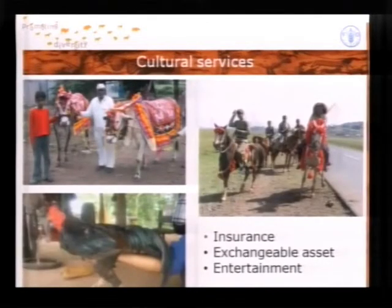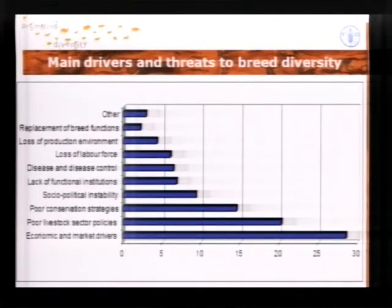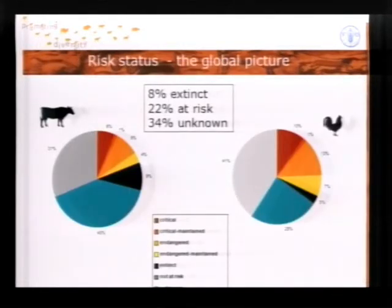There is a wide range of cultural services provided by livestock. The main threats to breed diversity are related to economic and market drivers and to structural changes related to the economic transition of agriculture. A second important group of factors is related to poor livestock sector policies that are not in favor of small-scale farming and biodiversity. A last group is related to institutional weaknesses and instabilities. The biggest losses have been in areas where structural change in agriculture has been fastest, which is Europe and North America.